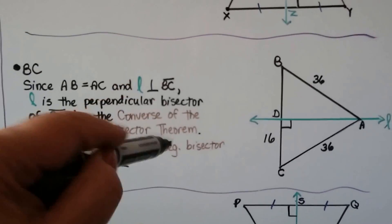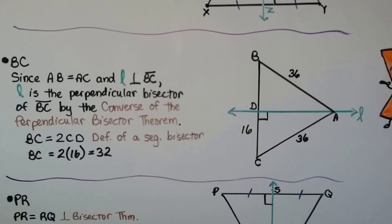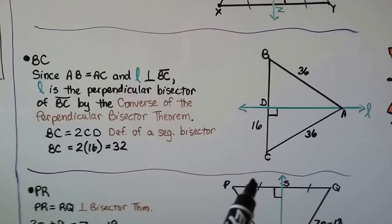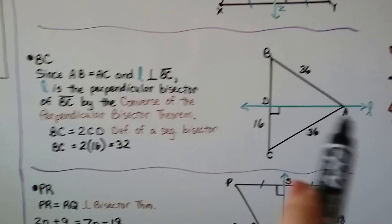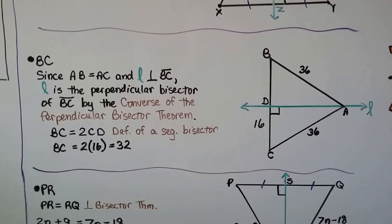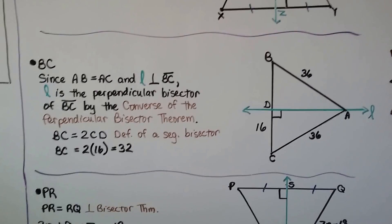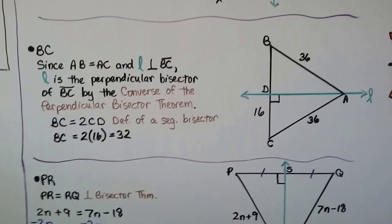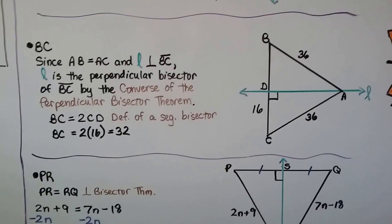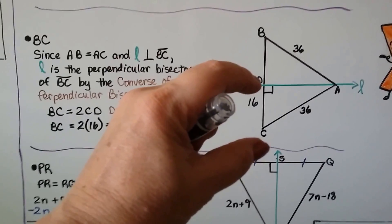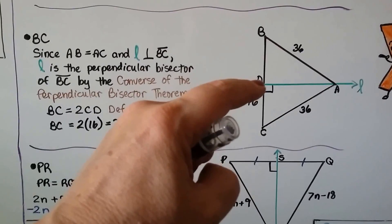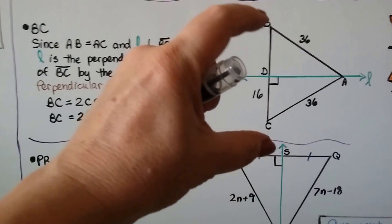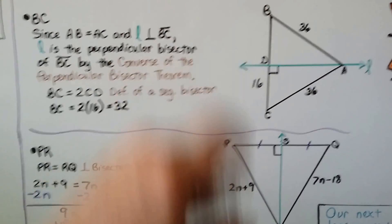We're looking for BC. Since AB, which is 36, is equal to AC, which is 36, and L is perpendicular to BC, then L is the perpendicular bisector of segment BC by the converse of the perpendicular bisector theorem. And BC equals 2 times CD. Since CD is 16 and D is the midpoint because it's a bisector, that must also be 16. So BC equals 2 times 16, meaning BC equals 32.